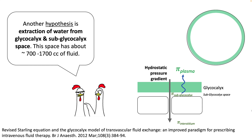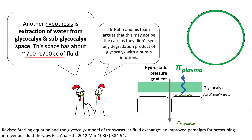Another hypothesis is that the oncotic pressure generated by new albumin extracts water from the glycocalyx and subglycocalyx space. Various experiments have found this space to contain about 700 to 1700 cc of fluid. So when you increase the oncotic pressure of the plasma you can certainly extract fluid from this space. However, Dr. Hahn and his team argue that this may not be the case, as in their experiments they have not seen any degradation product of glycocalyx with albumin infusions.